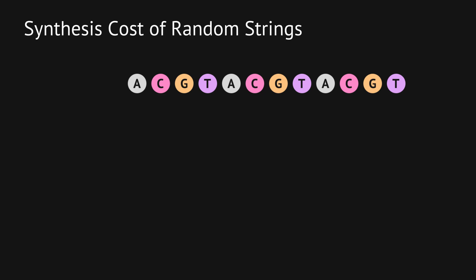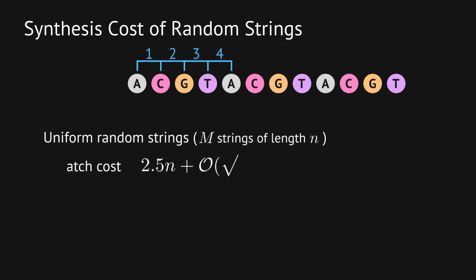So we focus on the synthesis cost of random strings. To understand the cost, it is helpful to imagine a random walk through the synthesis sequence. Each character moves us forward 1, 2, 3, or 4 steps. The average cost of each step is 2.5, and a string of length n takes 2.5n steps in expectation. For a batch of m strings, the cost will be at most 2.5n plus a deviation term.